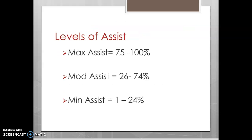Levels of assistance — this is definitely an area that will be asked on quizzes and exams. This refers to the amount of assistance that the physical therapist or caregiver is providing. If we are providing less than 25% of assistance, that is deemed minimal assistance or min assist. If we are doing roughly half the work — between 26 to 74 percent — that would be moderate assist. If we're doing 75% or more of the work, that would be max assist. Dependent transfer and max assist may be used interchangeably; basically the patient is able to help not at all or very little.